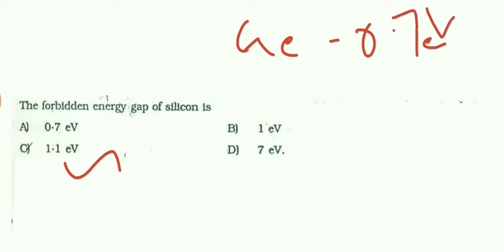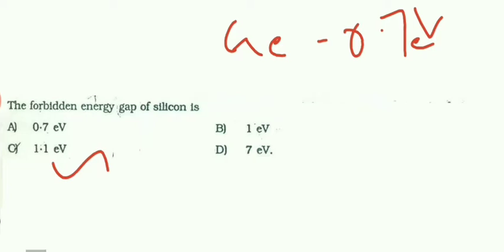We all know that the forbidden energy gap of silicon is 1.1 electron volts. If they ask for germanium, you can write for germanium it is 0.7 eV. They may ask for germanium also.